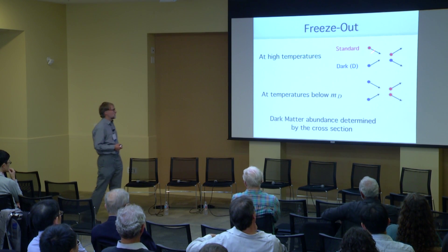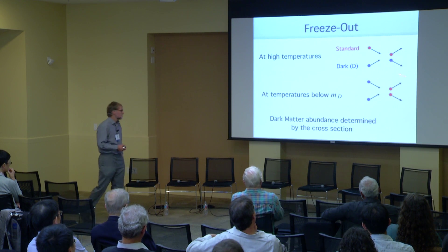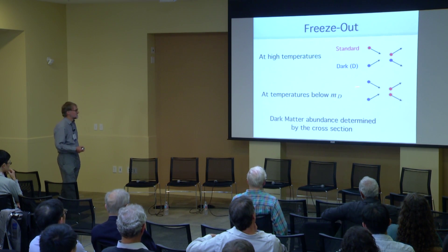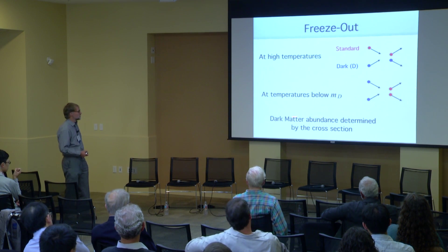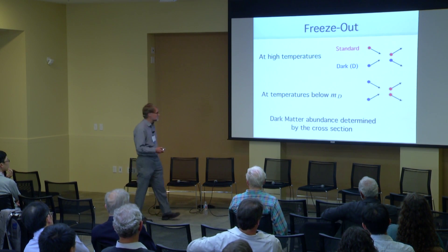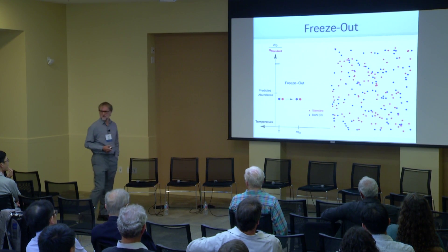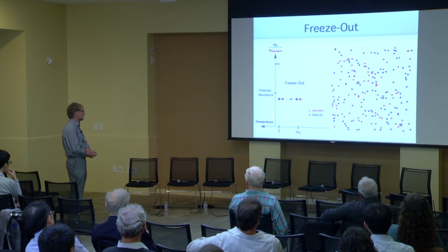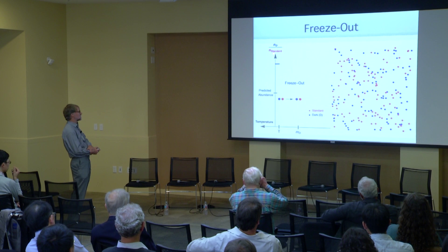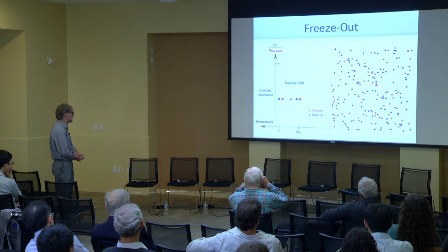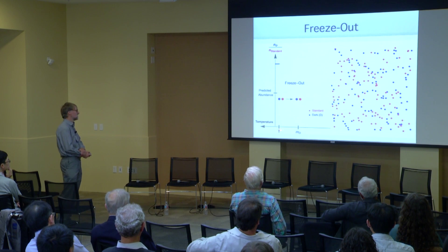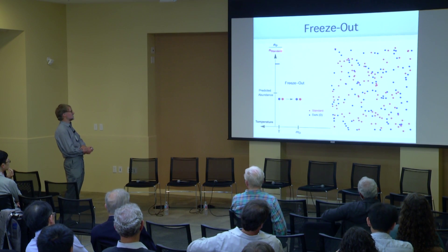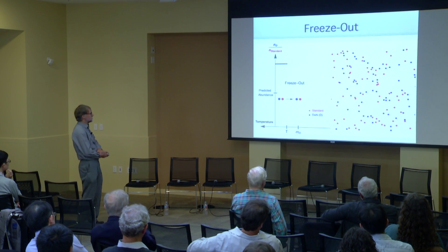Okay, so freeze-out. At high temperatures, the standard model and dark particles are scattering off each other. They're in thermal equilibrium. Below the temperature of the dark matter mass, the dark matter particles in blue annihilate away. And the dark matter abundance is determined by this cross-section. Here's a cartoon of how it goes. I'm going to give you some time sequences or temperature sequences. Here's the dark matter on the standard model particles in thermal equilibrium. On the vertical axis here is the ratio of the number of dark matter particles to the number of standard model particles. And on the horizontal axis is temperature, and we're at very high temperature.